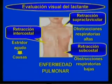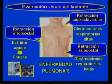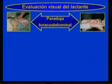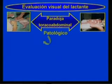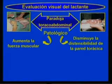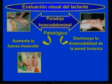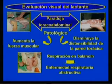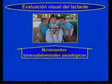Para ello te sugerimos estudiar estos aspectos en la literatura recomendada. La paradoja tóraco-abdominal es normal en recién nacidos y lactantes prematuros; se considera patológica a medida que aumenta la fuerza muscular y disminuye la distensibilidad de la pared torácica. En los lactantes la respiración en balancín es sugestiva de enfermedad respiratoria obstructiva. Los niños con debilidad muscular pueden tener movimientos tóraco-abdominales paradójicos ya con varios años de edad.